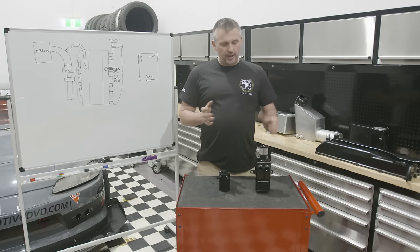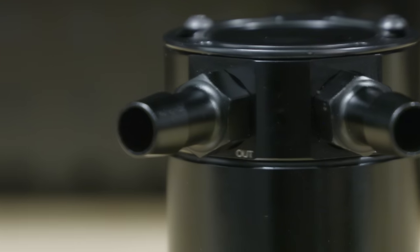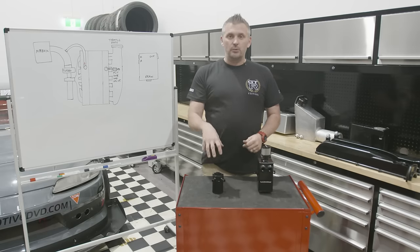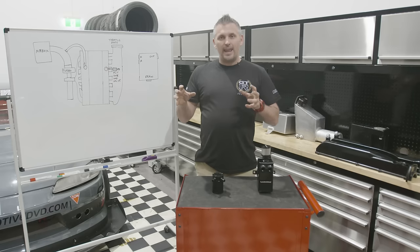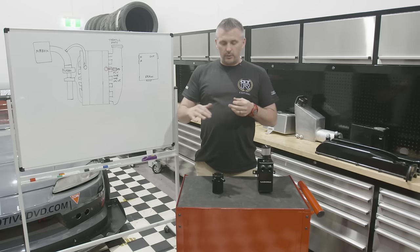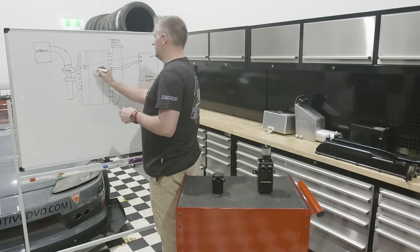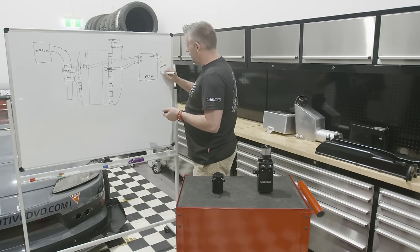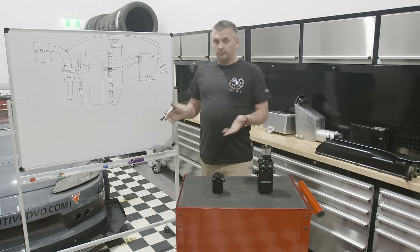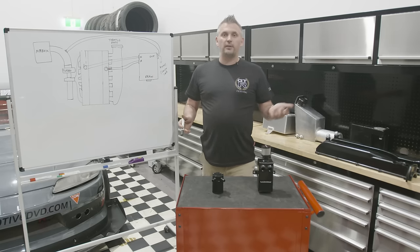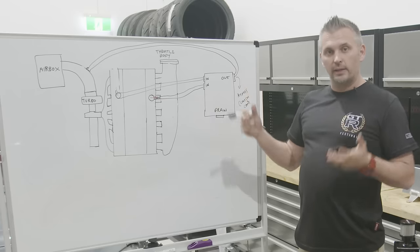A catch can vents to atmosphere, usually through a filter, while an oil-air separator has a line come in, separates the air and the oil, and returns the air back through the engine — it's a sealed system. An oil catch can is actually illegal because it vents to atmosphere and breaches emission laws. An oil-air separator is legal because the lines return back into the intake as a totally sealed system.